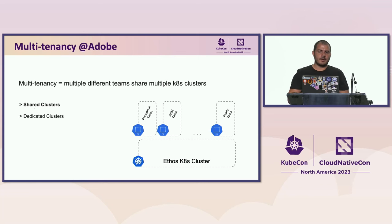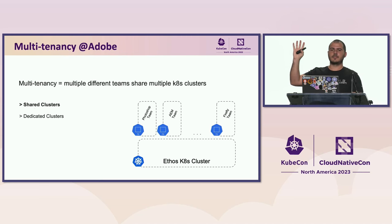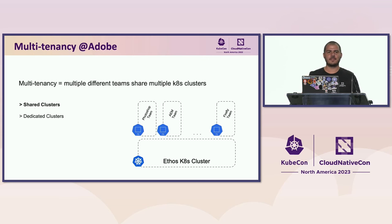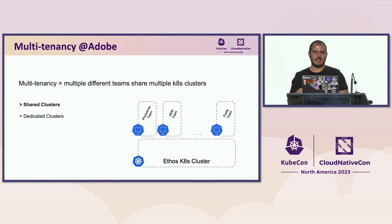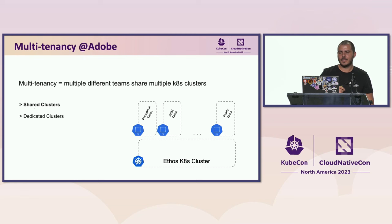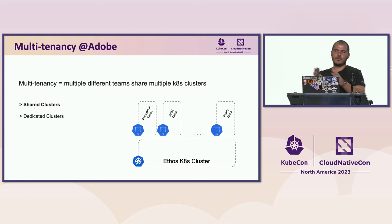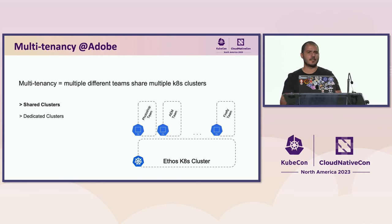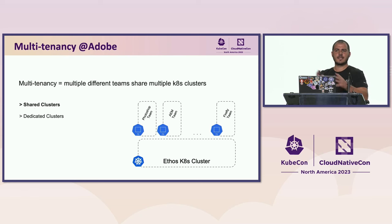Let's talk about multi-tenancy in Kubernetes. At Adobe, we use multi-tenancy architecture as a way to share multiple physical clusters with multiple teams from different organizations and projects. We have two types of clusters: shared clusters and dedicated clusters, also known as multi-tenant clusters and single-tenant clusters.